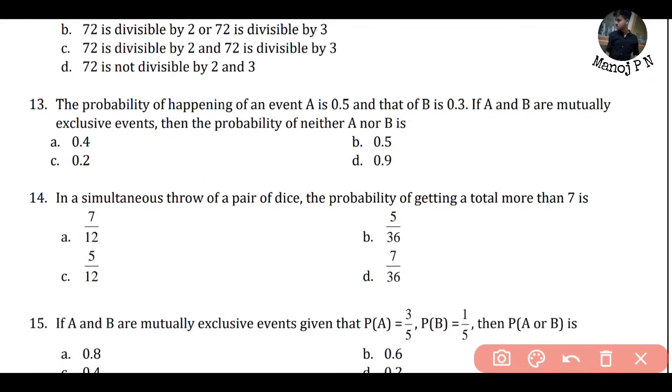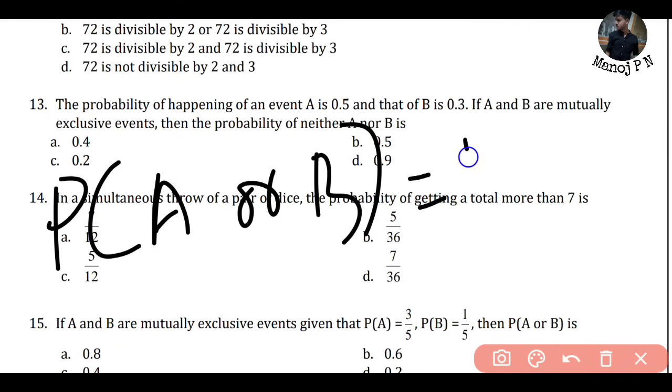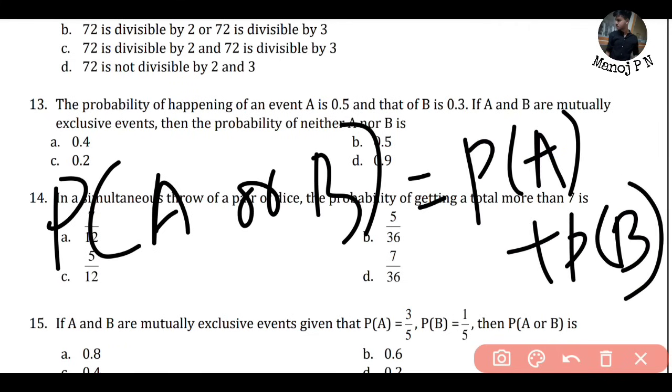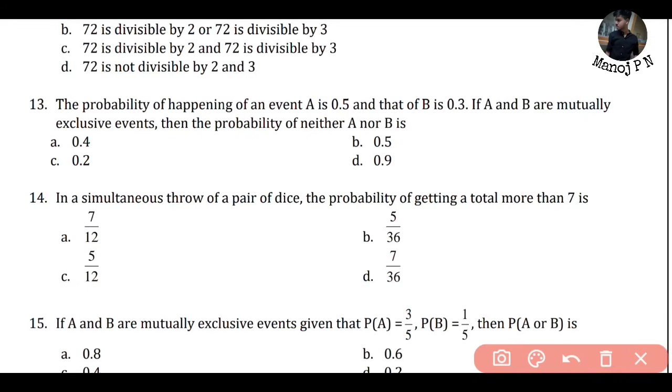The probability of happening of an event A is 0.5. The happening of event A is 0.5. That of B is 0.3. B happening is 0.3. If A and B are mutually exclusive events - this is the main point guys. If event A and event B are mutually exclusive, then the formula you should remember is: P of A or B is equal to P of A plus P of B. Probability of A or B will always be equal to probability of A plus probability of B. This is the formula you're supposed to remember.